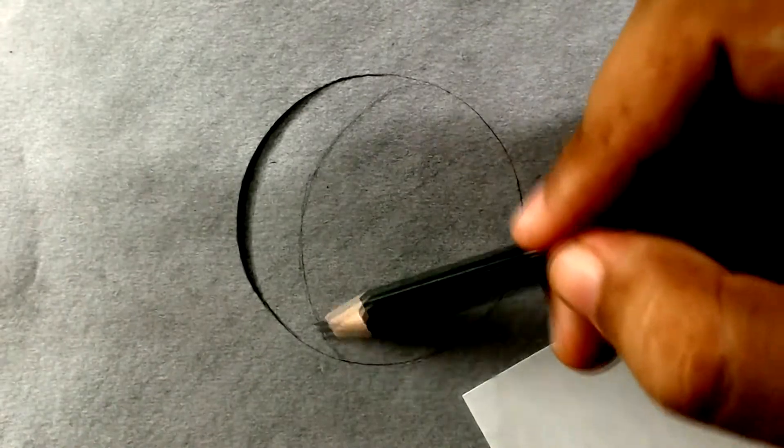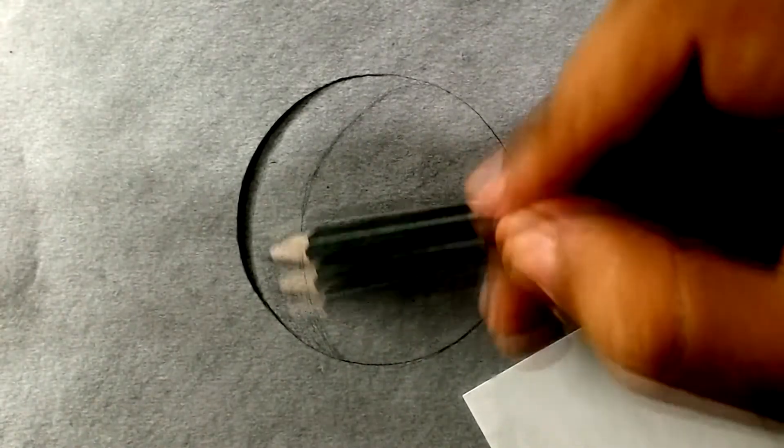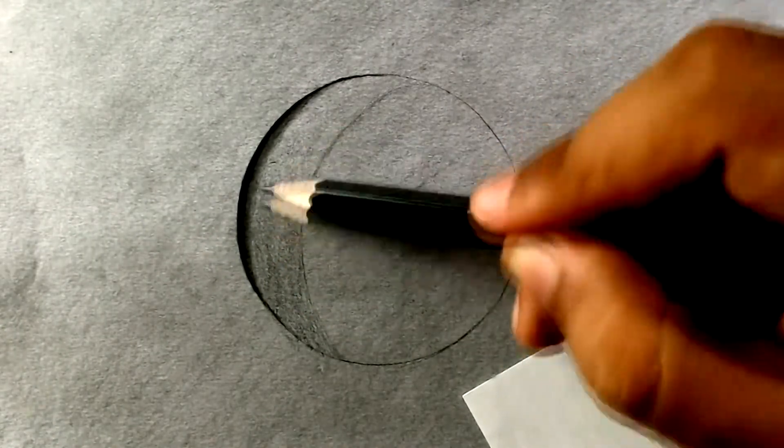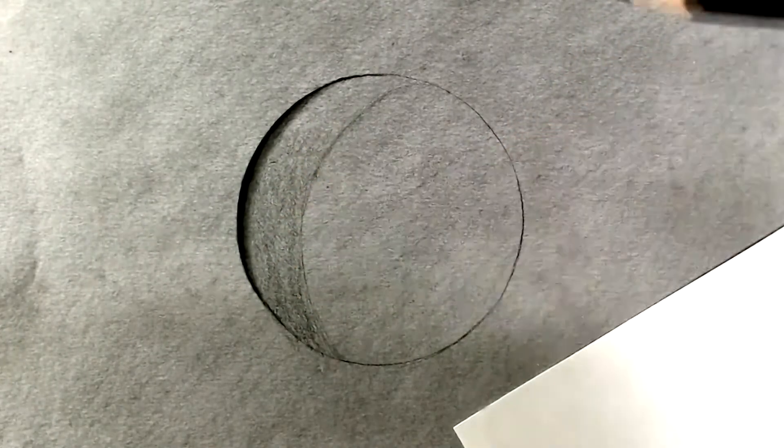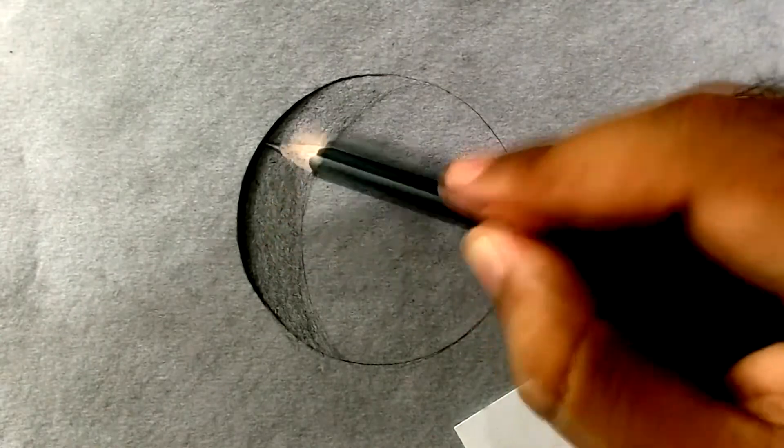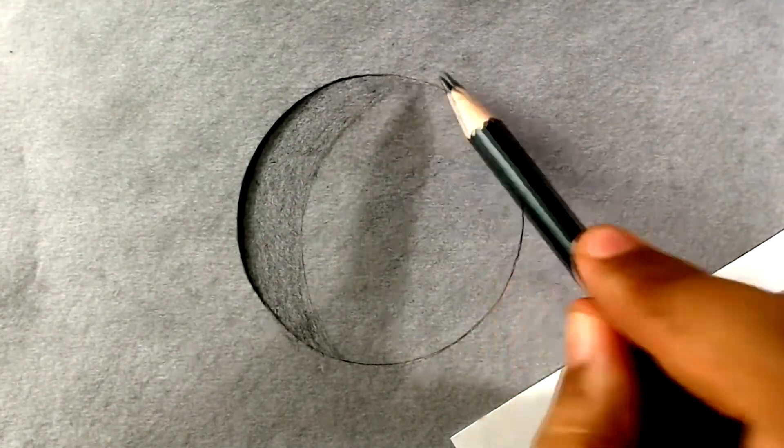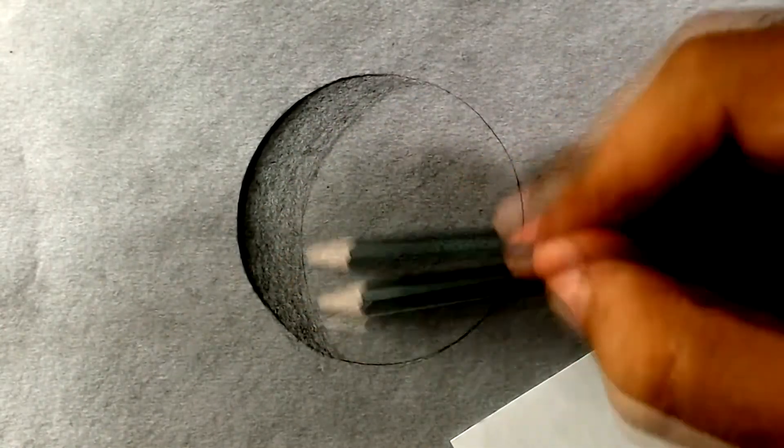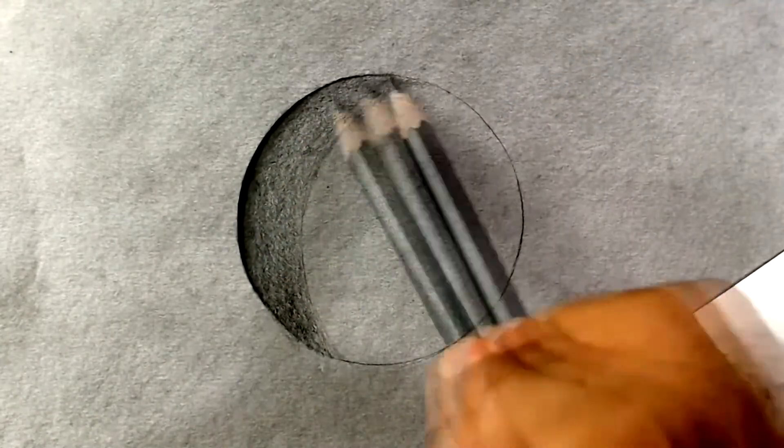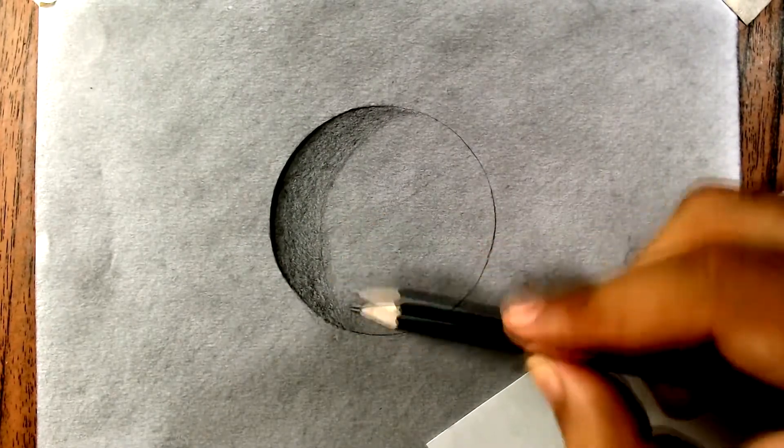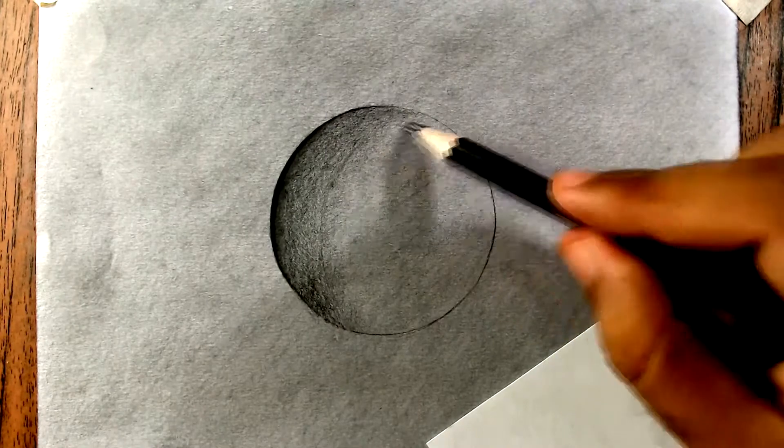Now with the same 4B pencil, let's darken this area that we've just created first. For this, I'm not pressing hard the pencil and I'm using the side of the pencil to make the creation of that layer easier. Once we've done it, we create a transition between that area going to the lightest area on the right side.